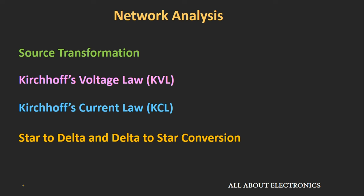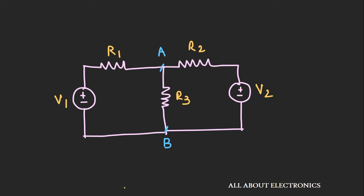Sometimes your entire focus is on a particular element in the circuit and you want to find the voltage or current across it. For example, suppose you have a circuit and you want to find the voltage and current through resistor R3. You could use Kirchhoff's voltage law or current law, but what if you need to find the voltage and current across terminals AB for 20 different values of R3? Because sometimes you need to see the behavior of the circuit for different loads. In such cases, Thevenin's theorem is a quite useful technique.